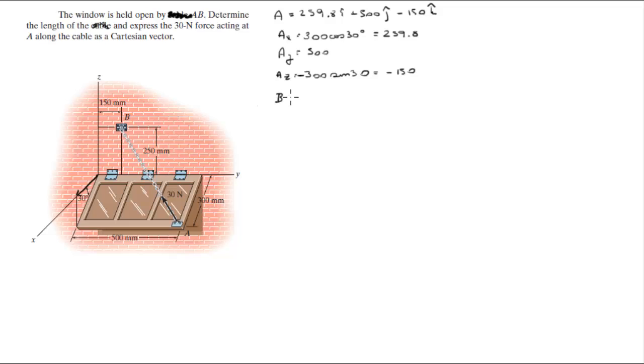Now B is easy because it has no magnitude on the X direction. So it's 0 I plus 150 J, going 150 this way and 250 in the K direction.